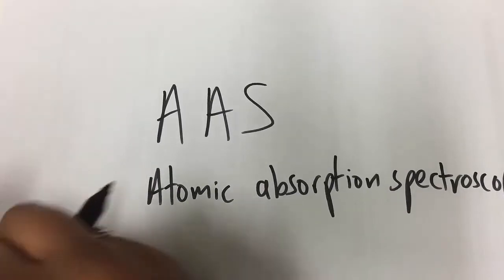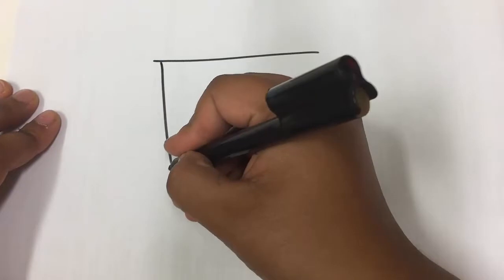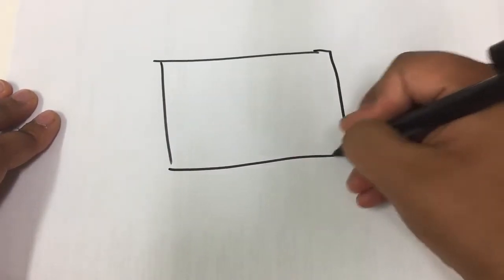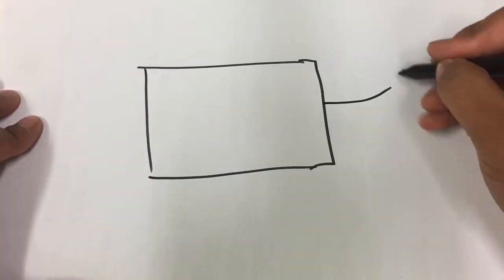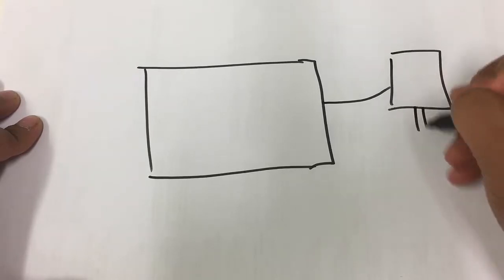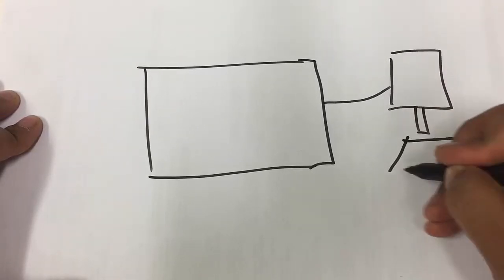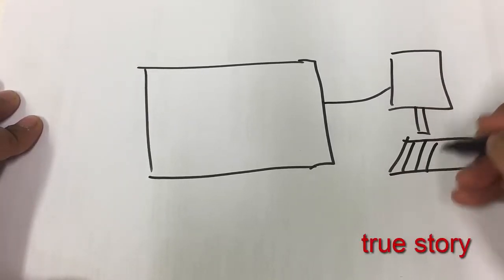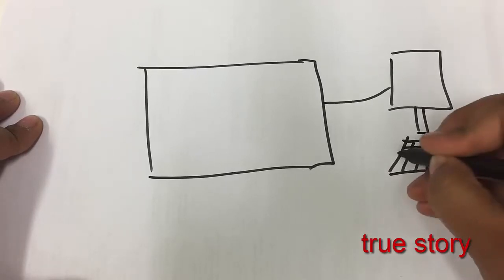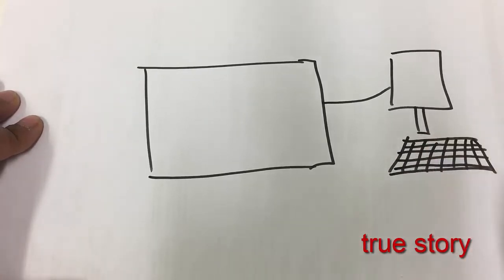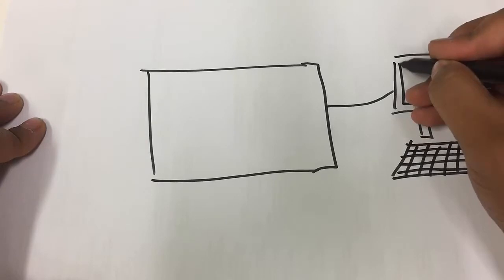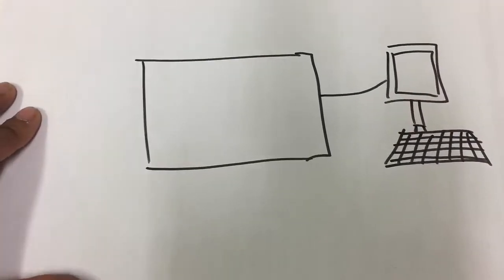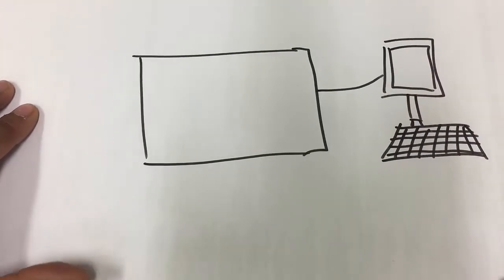So the first thing I'm going to do is draw a little diagram of what an AAS machine would be laid out. We've got kind of like that box where everything is in and that's usually connected to some sort of computer. Now I called it a machine, in real life if you tell a scientist it's a machine they'll get really mad at you because they like to call it an instrument. But I sometimes mess up so I call it machine. They can just get over it.